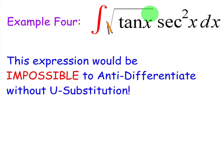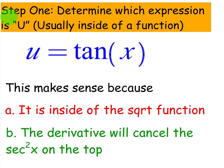That would lead you to believe that your u is tangent plus the fact that the derivative of tangent is secant squared. You will get a cancellation here. You're going to set your u equal to tangent of x for step 1, and that's because it's inside of the square root and the derivative of that is secant squared.